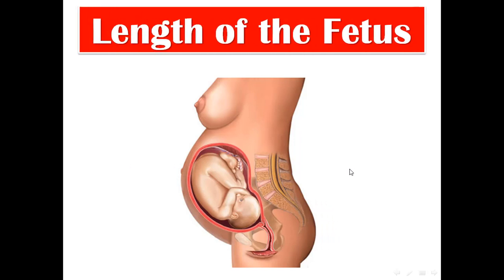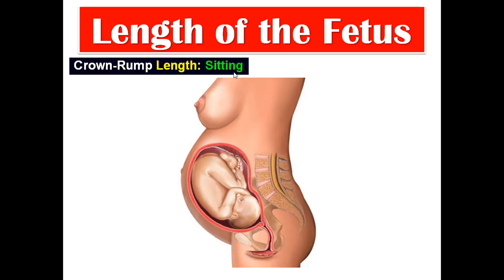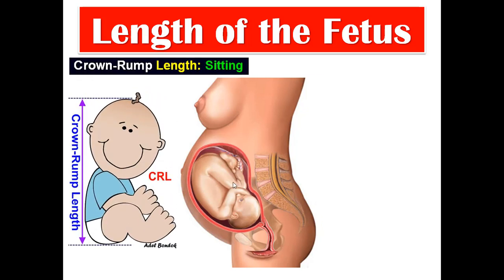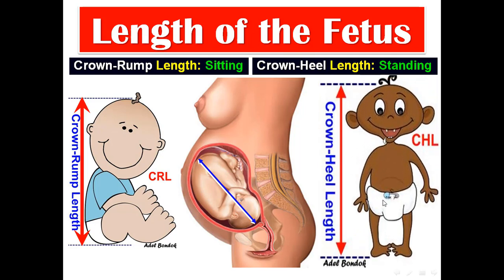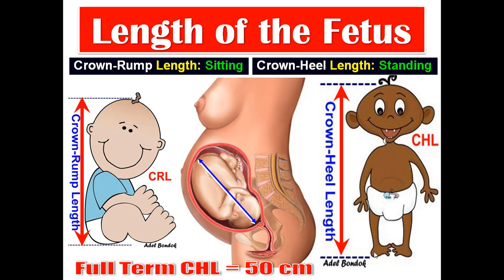Starting with the length of the fetus, we have two types. First, crown-rump length, or sitting height — from the vertex to the buttocks. The other one is crown-heel length, or standing height — from the vertex to the heel. The full-term fetus is about 50 cm in length.